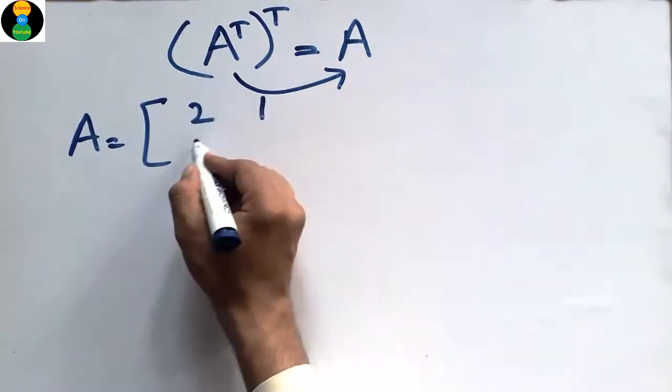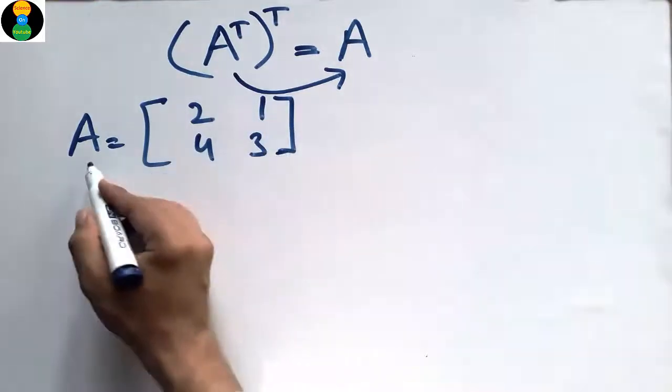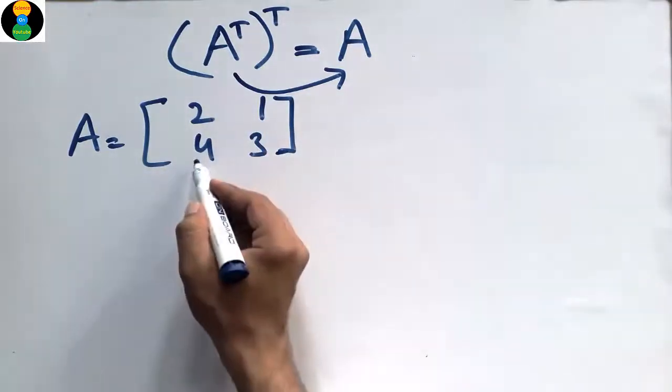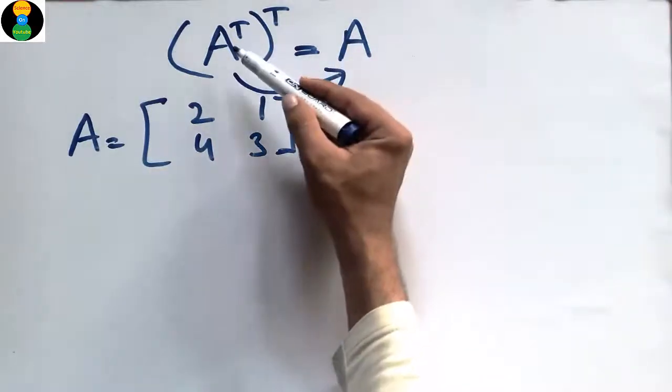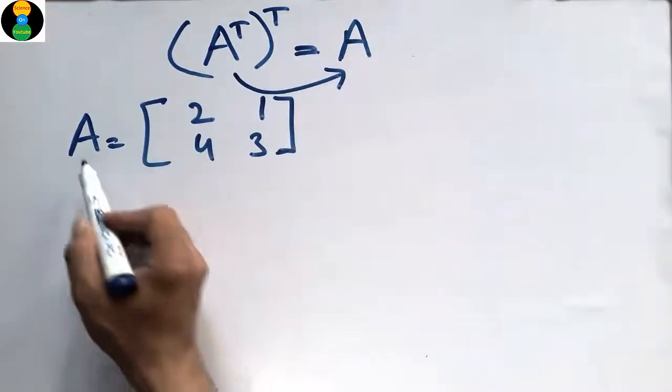Let's take an example. The matrix A equals [2, 1; 4, 3]. By proving this relation, the transpose of A and again the transpose will make the same A.